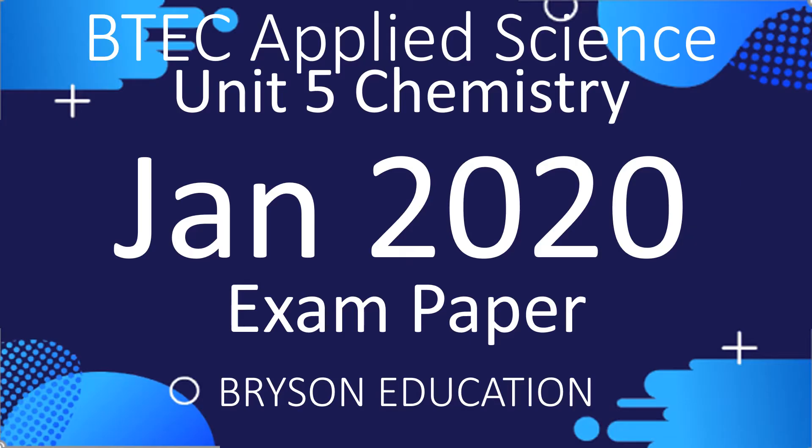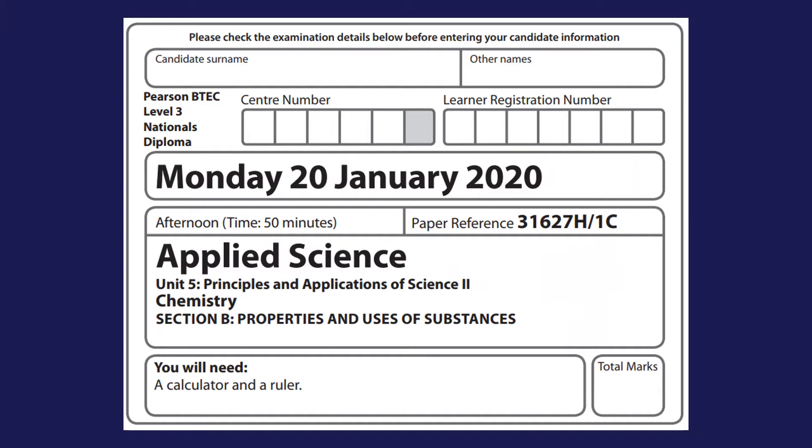Hello there, welcome to my channel on chemistry lessons. This is a BTEC Applied Science Unit 5 Chemistry, and we're going to be looking over the January 2020 paper. If my memory serves me correct, this was literally as COVID broke, so you won't find a June 2020 paper because it didn't exist. This was the last paper I sat before COVID, and you'll get 50 minutes for this, which I think is quite generous.